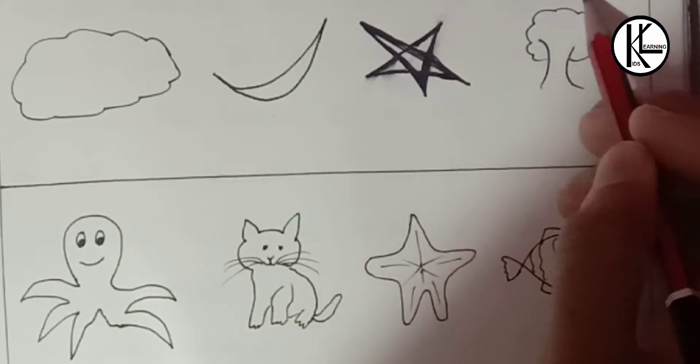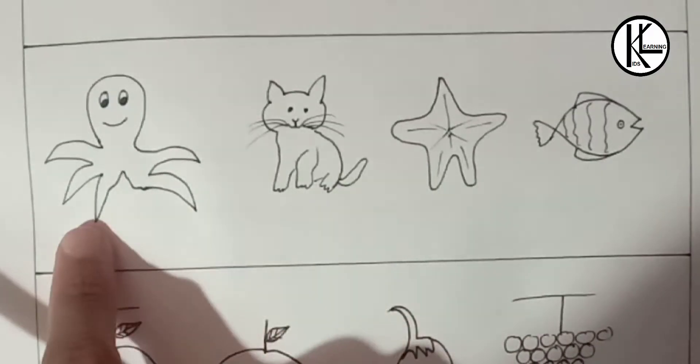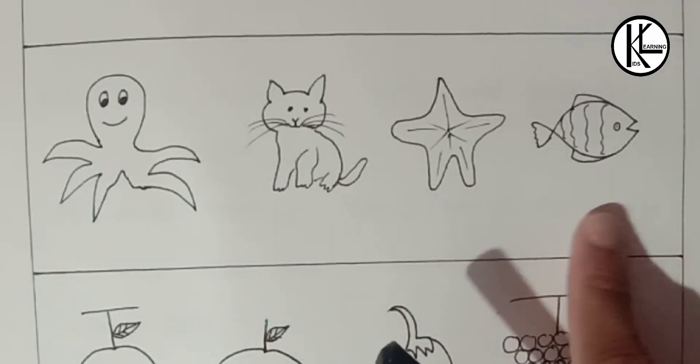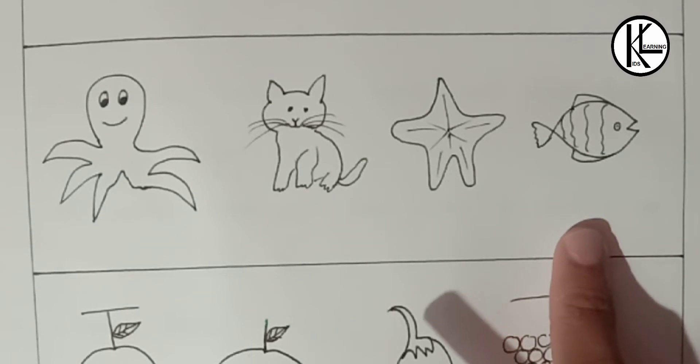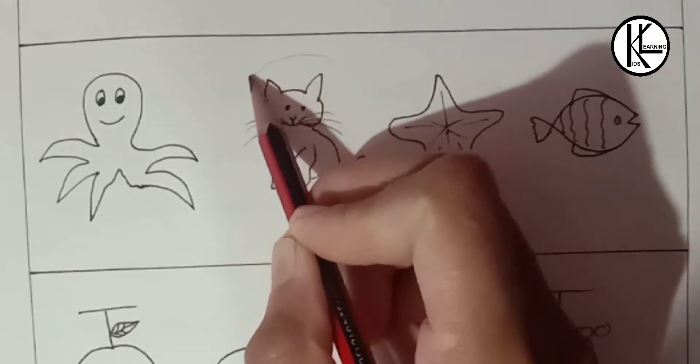In second row you can see there are three animals belonging to sea and this is a pet, a cat. So kids have to circle this cat.